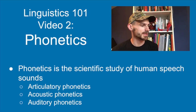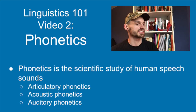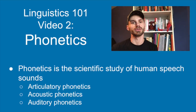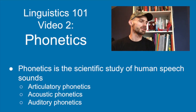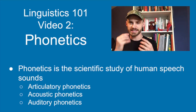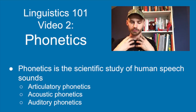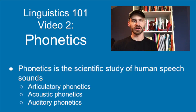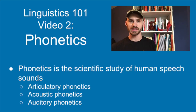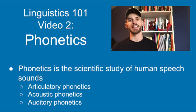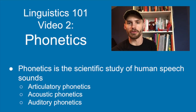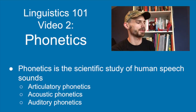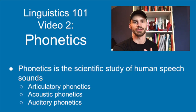Phonetics is the scientific study of human speech sounds, and there are three different areas. There's articulatory phonetics, which is the study of what exactly human beings do with our tongues, lips, throats, and lungs when producing speech sounds. Acoustic phonetics is the study of the actual sound waves passing through the air — the frequency, amplitude, and different properties of the sound waves. And auditory phonetics is the study of what happens when those sound waves reach the ear of the listener. We're going to focus mainly on articulatory phonetics in this course because that's the one most useful to language learners.